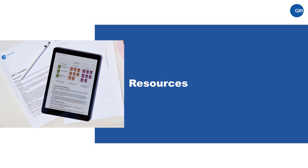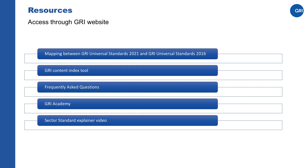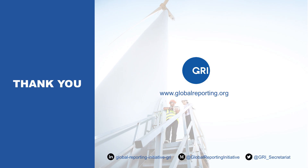Finally, to help you navigate the changes, we have developed a suite of resources accessible on our website. These include a mapping tool showing the changes in disclosures between GRI Universal Standards 2021 and GRI Universal Standards 2016, a new content index tool to help prepare your content index, FAQs, and new online trainings. All of this will make it easier to become familiar with the new GRI Standards and help you start reporting using them after the effective date of January 2023. Thank you very much.